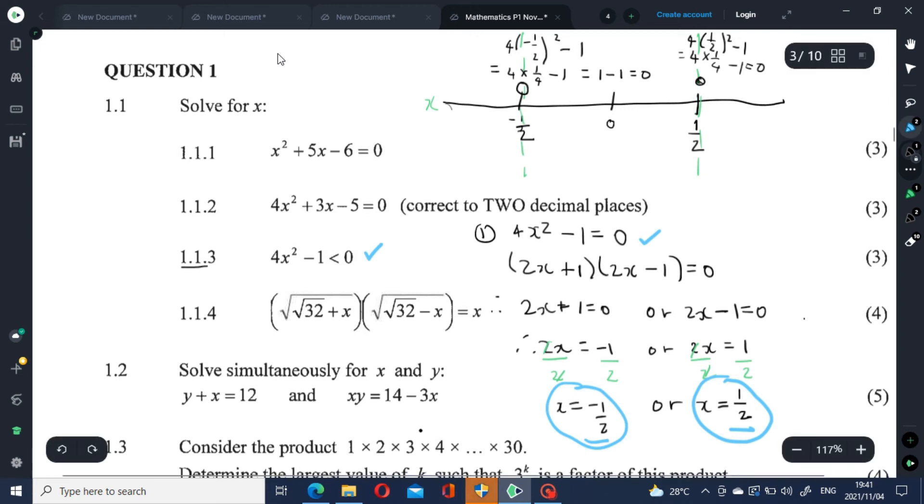Let's check the middle region between minus half and positive half. Let's just choose any arbitrary value. I think 0 is easier to work with because it's a whole number. Let's substitute 0 into the expression 4 times 0 squared minus 1. It gives us minus 1, and quite clearly, minus 1 is less than 0. So it seems values greater than negative half and less than half do satisfy the inequality.